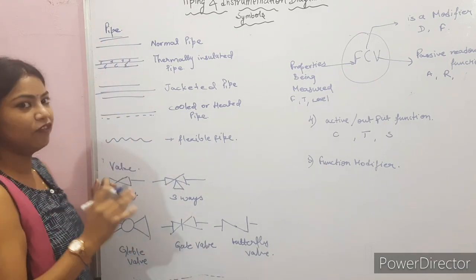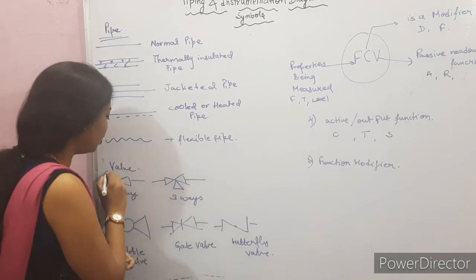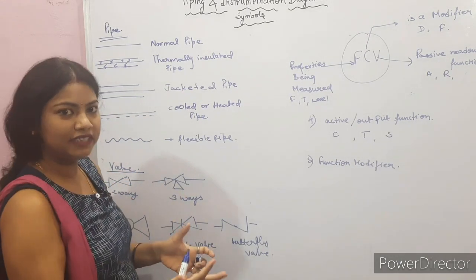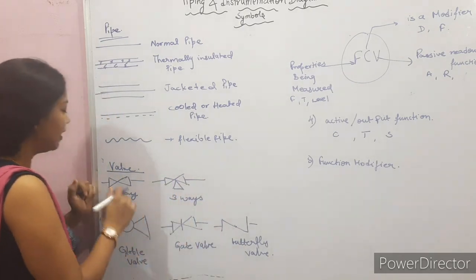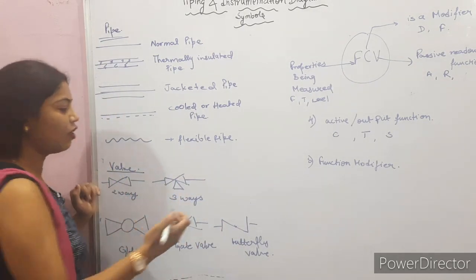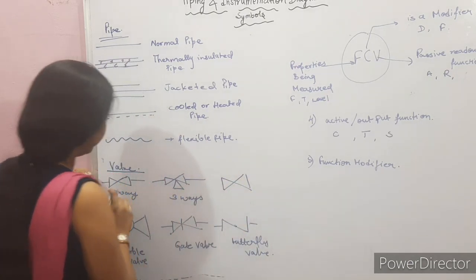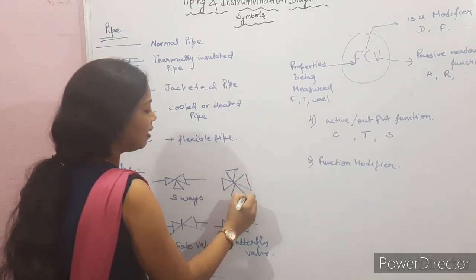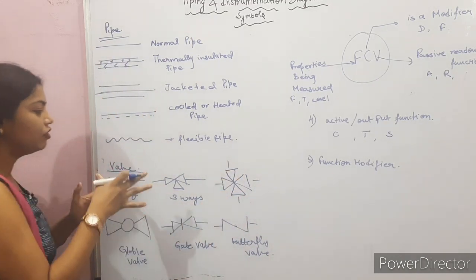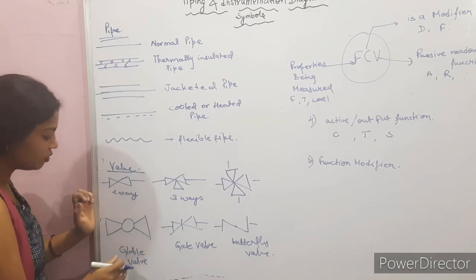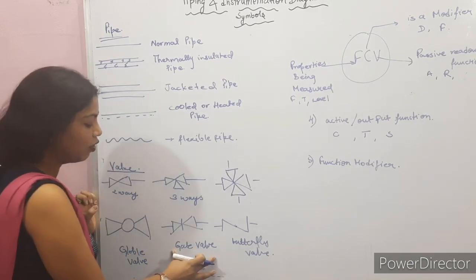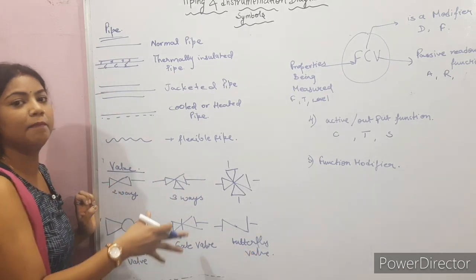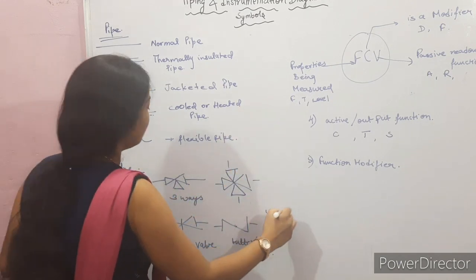Now let's talk about valves. Valves are essential — without them we can't control instruments. We have different types: two-way valves, three-way valves, and four-way valves. In terms of valve types, we have the globe valve, the gate valve, and the butterfly valve.